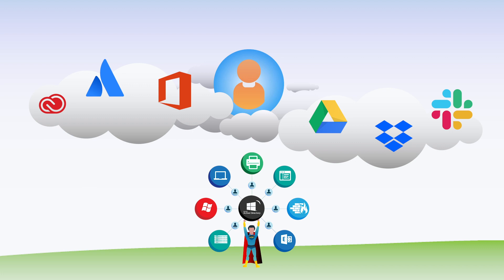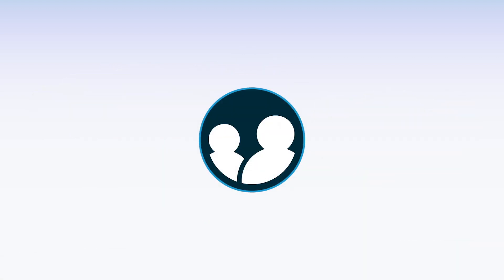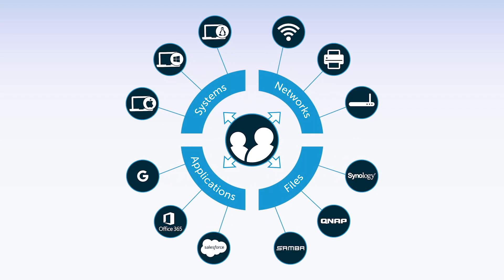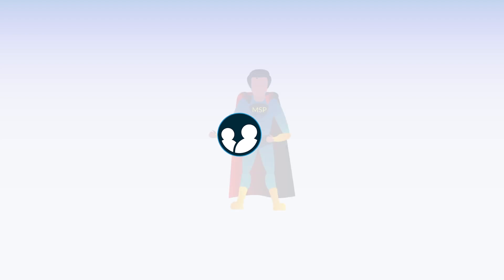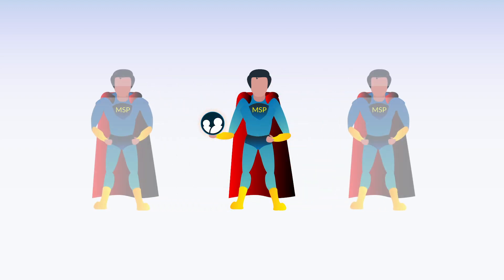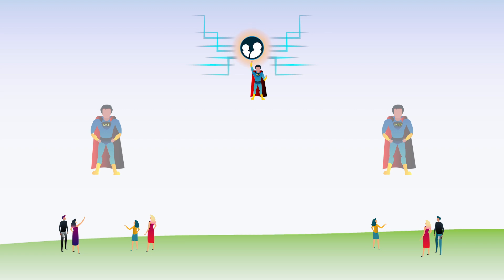The good news is, JumpCloud Directory as a Service is effectively Active Directory reimagined for the modern era. It enables IT organizations to connect to virtually any IT resource without anything on-prem. Specifically for MSPs, JumpCloud has taken the concept of identity management a step further by offering a multi-tenant portal, which enables MSPs to manage multiple client accounts from a single pane of glass. As a result, MSPs and IT organizations alike are free to choose the best IT resources to suit their specific needs.